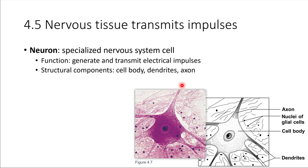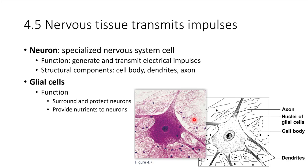You'll also notice in this picture there are a lot of little dark spots in the nearby vicinity. These are actually cells also — much smaller cells, and they are present to help the neuron do its job. These smaller cells are called glial cells, and their whole purpose is to protect the neuron, provide it with nutrients that it needs, and help it be able to do its job. So neurons and glial cells together make up nervous tissue.